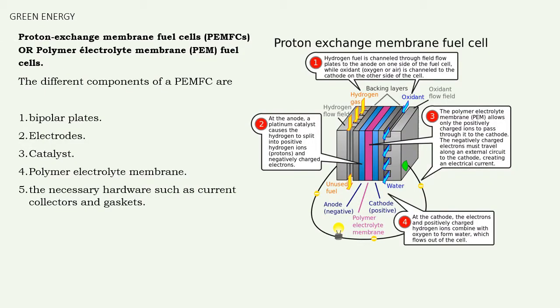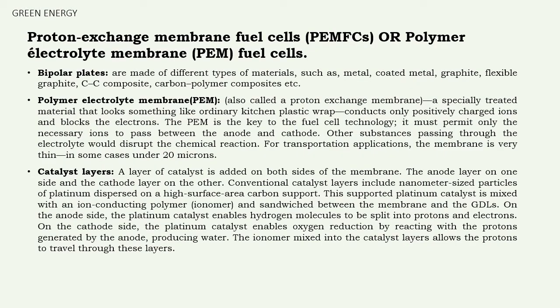Let us discuss about proton exchange membrane fuel cells, also called polymer electrolyte membrane fuel cells. The important components of this type are: bipolar plates, electrodes, catalyst, polymer electrolyte membrane, and necessary hardware such as current collectors and gaskets. On the right side you can see the sketch — you can pause the video and go through it. We will discuss in detail about the working in the upcoming slides. First let us discuss the function of each component and from what material they are made.